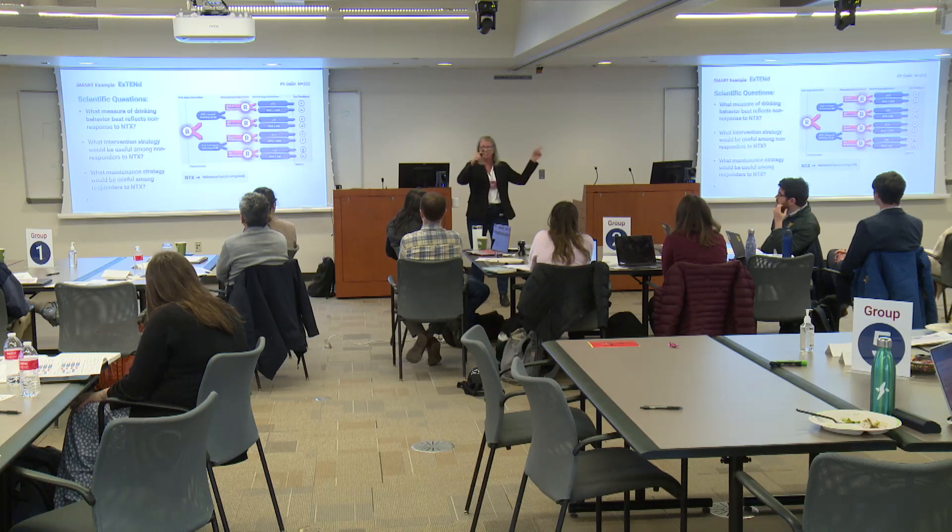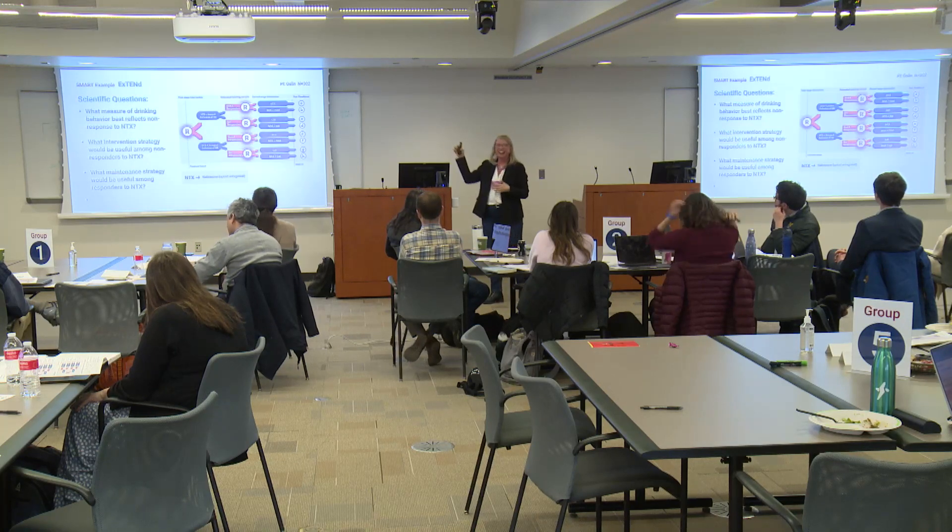If we take the scientific questions and lay them alongside the SMART design, we can see that for every scientific question there is a randomization. The first scientific question about the lenient versus stringent definition of non-response maps to the stage-one randomization. The second and third questions — about what to do for non-responders and what to do for responders — each have their own randomizations as well.